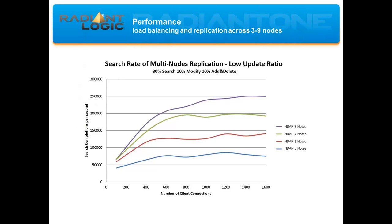This chart depicts the HDAP performance results. For a cluster of three nodes, indicated with the blue line here, with 1,600 clients performing 80% searches, 10% modifies, and 10% adds and deletes, speeds reached about 75,000 queries per second. For a cluster of nine nodes, shown by the dark purple line here, with the same amount of clients, speeds reached 250,000 queries per second.